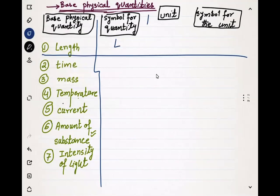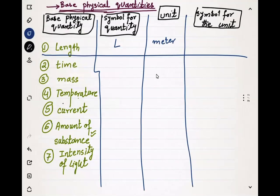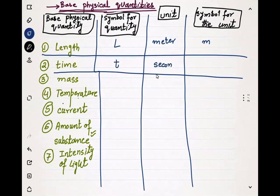The symbol for length is L, the unit for length is meter, and the symbol for the unit is m. The second quantity is time, represented by smaller t. The unit is second and the symbol for the unit is smaller s.